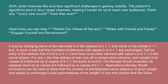Call an entry of the tableau free if it is k or k plus 1, and there is no other element with value k or k plus 1 in the same column. For any row i, the free entries are all in consecutive columns and consist of a_i copies of k followed by b_i copies of k plus 1. The Bender-Knuth involution sigma k replaces them by b_i copies of k followed by a_i copies of k plus 1.